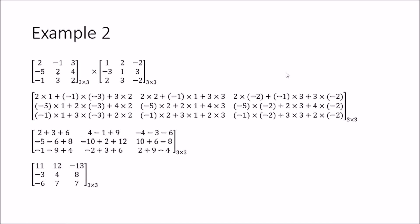In the second example we multiply two three-by-three matrices. Again, the column number of the first matrix equals the row number of the second, so we can multiply. The resultant is a three-by-three matrix. We perform all nine element multiplications — for example, 2×1 + (−1)×(−3) + 3×2, and likewise for all terms — simplify them, and get the final answer.